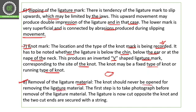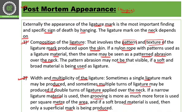Regarding removal of the ligature material: the knot should never be opened for removal. The first step is to take a photograph before removal. The ligature is then cut opposite to the knot — we do not open the knot itself — and then the two cut ends are secured with a string. These are the main factors affecting external findings in post-mortem examination in cases of hanging.